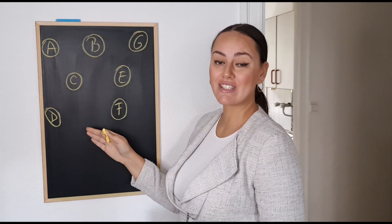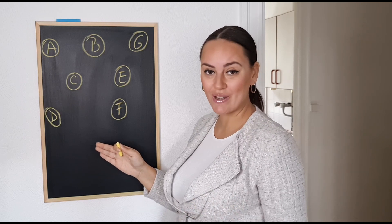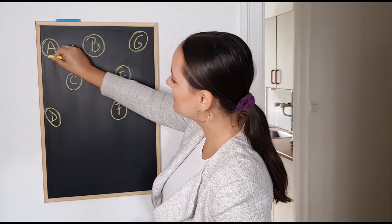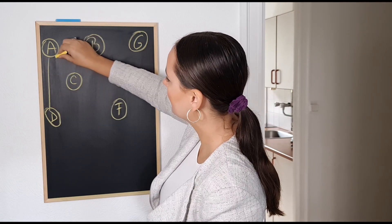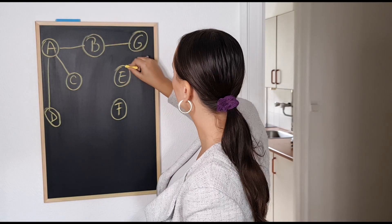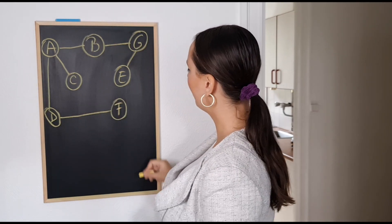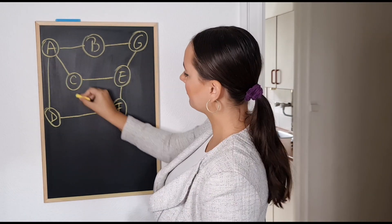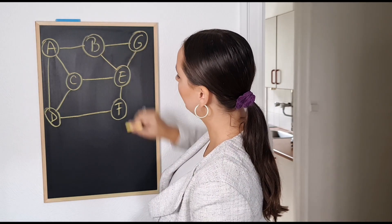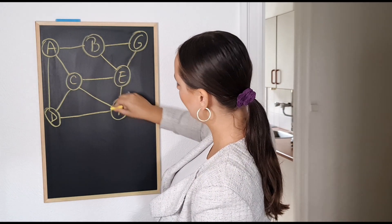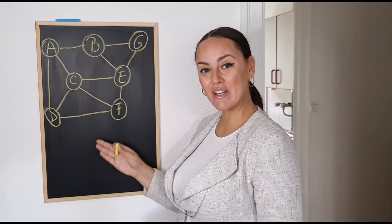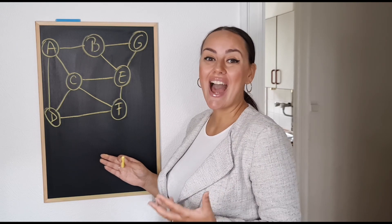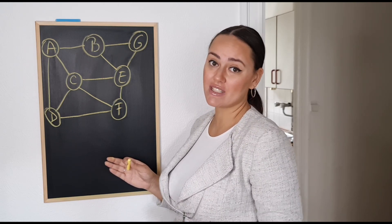These are our vertices, but in order to perform Kruskal's algorithm, I'm going to need to connect them together. So I'm going to create connections between A and D, A and B, A and C, B and G, B and E, D and F, E and F, C and E, D and C, and C and F. Now we have a connected graph, but I'm going to need to add edge weight to each of our edges.